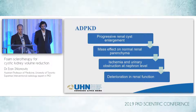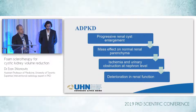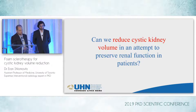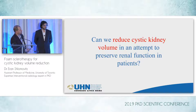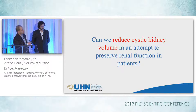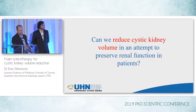In theory, these cysts enlarge and cause local mass effect on the normal renal parenchyma. They cause some local ischemia and some obstruction at the nephron level, which results over time in deterioration in kidney function. So the whole idea behind polycystic kidney disease is: can we reduce the size of the cysts in these kidneys, and can we help preserve kidney function over time?